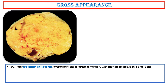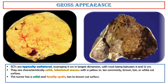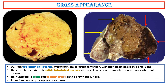Gross Appearance: Sertoli cell tumors are typically unilateral, averaging 9 cm in largest dimension, with most being between 4 and 12 cm. They are characteristically solid, lobulated masses with a yellow, or less commonly brown-tan or white cut surface. This tumor has a solid and focal cystic tan-to-brown cut surface. A predominantly cystic appearance is rare.